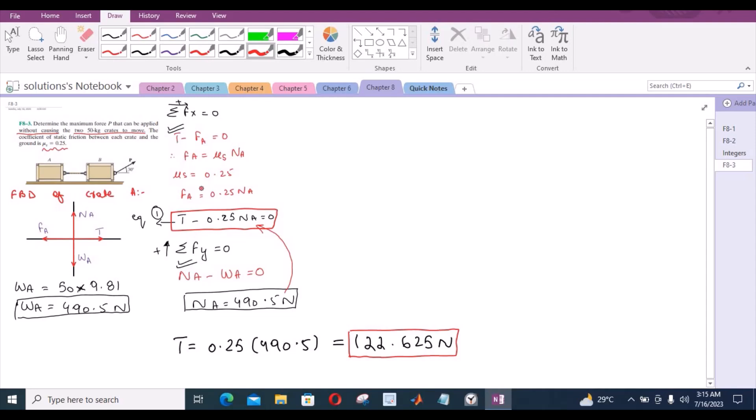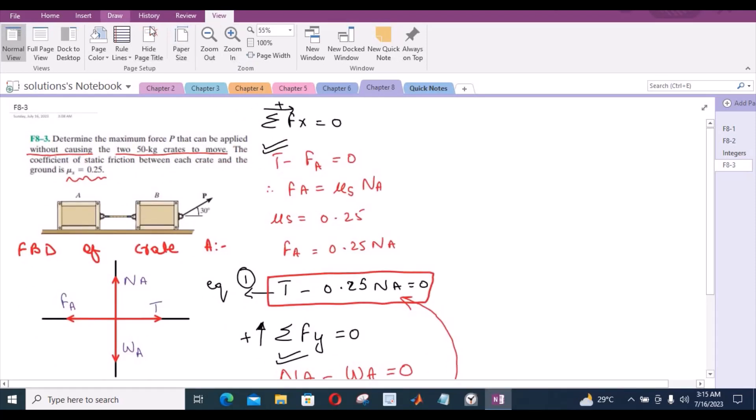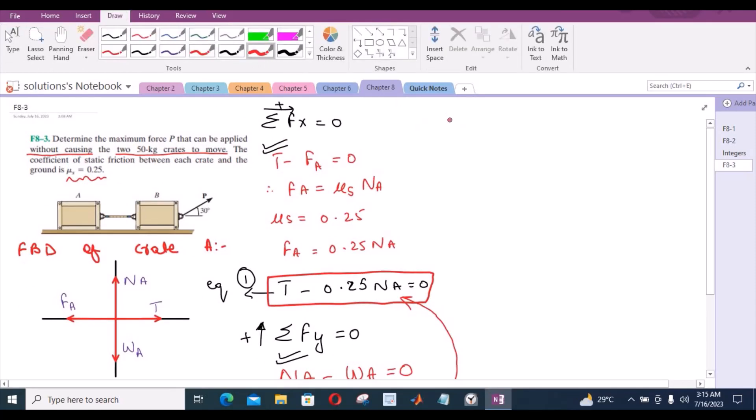So now we will do the same process for crate B to find the unknown forces acting on it. So let's draw the free body diagram by zooming. Let's draw the free body diagram of crate B.